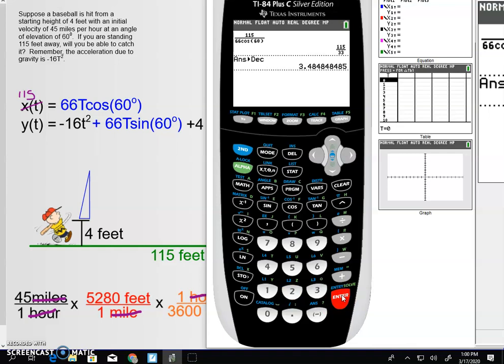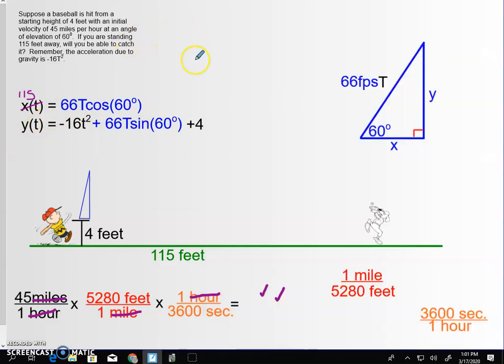So, in three and a half seconds, this ball's traveled 115 feet. Now, I need to see how high up in the air that ball is going to be when it's traveled 3.48 seconds. So, that means I'm going to have to take this 3.48 seconds and plug it into this equation for t. And that will give me my height.